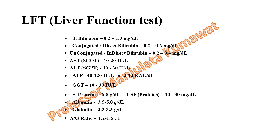GGT (gamma-glutamyl transferase) is 10 to 30 international units per liter. For serum protein, note that most parameters are in mg per dL, but protein is in grams per dL. Total protein is 6 to 8 g per dL, albumin 2.5 to 5 g per dL, and globulin 2.5 to 3.5 g per dL. CSF protein is 10 to 30 mg per dL. The A/G ratio is 1.2 to 1.5 to 1.